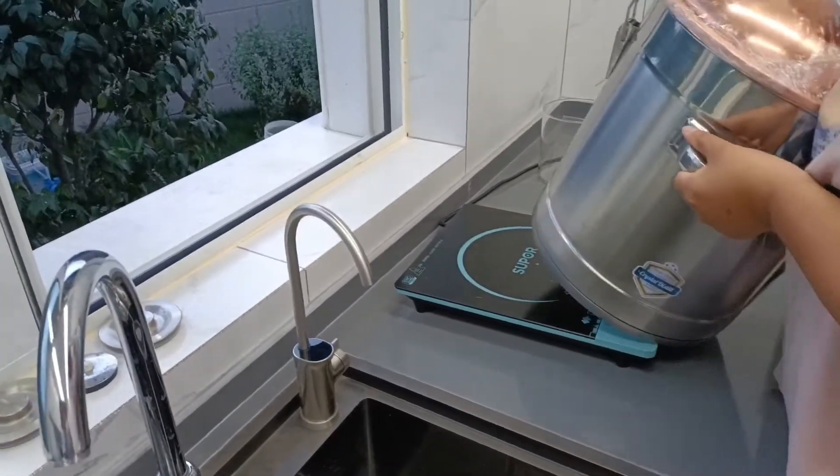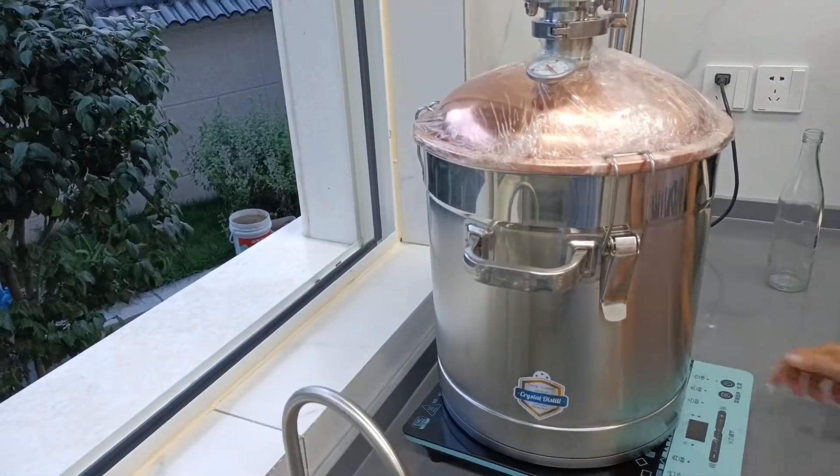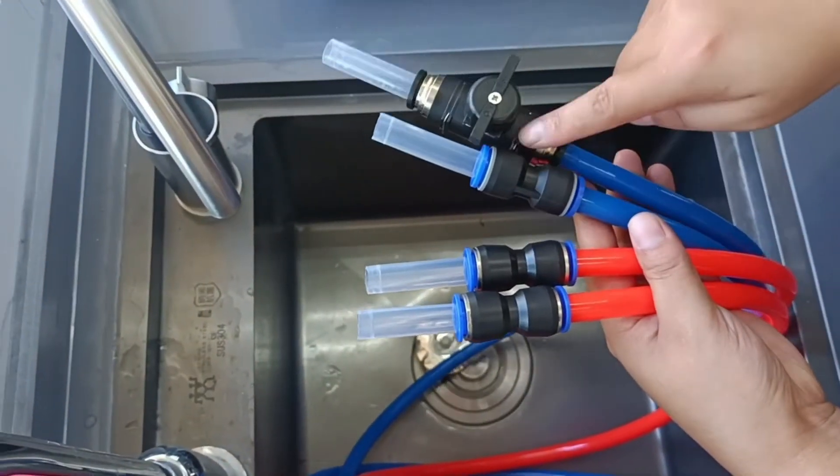Put the complete seal on the induction cooker. Find the cooling pipeline and tidy it.